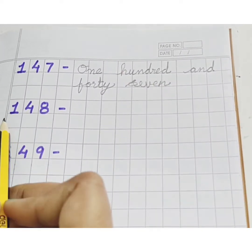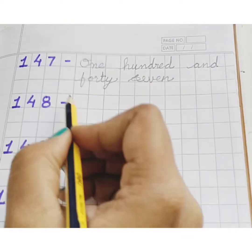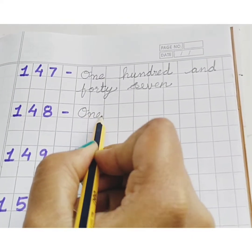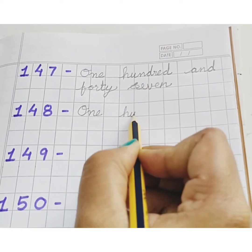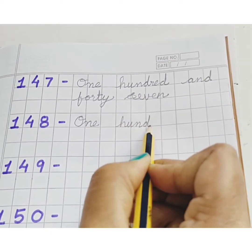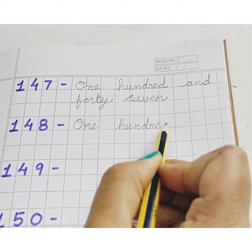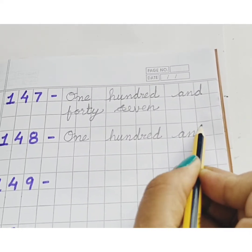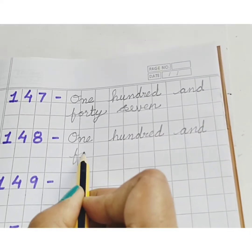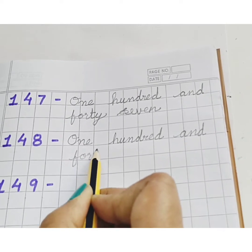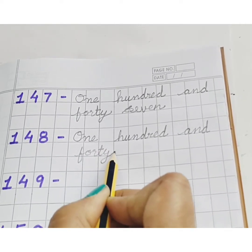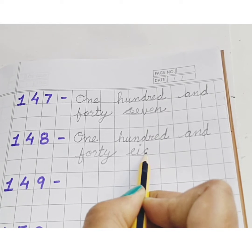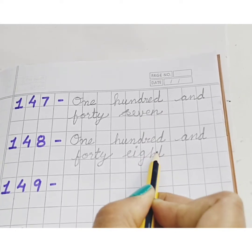Next, 148. O, N, E — ONE. H, U, N, D, R, E, D — ONE HUNDRED. AND FORTY. One Hundred and Forty Eight. 148.